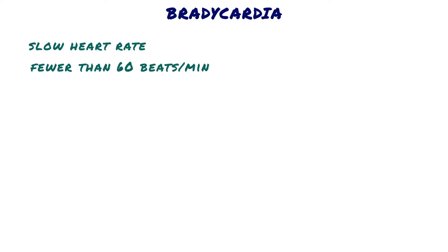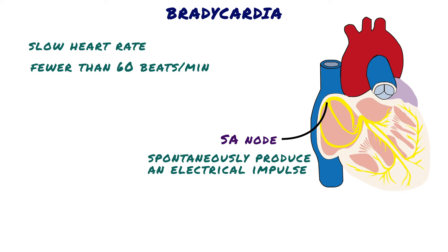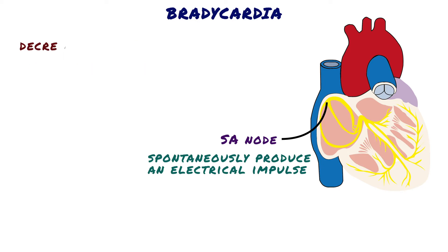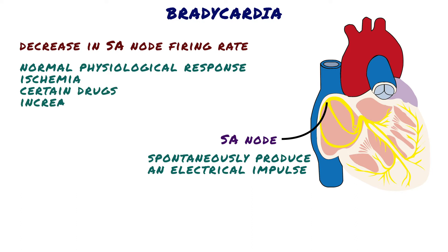For a slow heart rate to occur, there must either be a problem with the SA node — a group of cells located in the wall of the right atrium of the heart. These cells have the ability to spontaneously produce an electrical impulse, or there must be a block somewhere in the conduction system. A decrease in SA node firing rate can be a normal physiological response, or the result of ischemia, certain drugs, or increased vagal tone.